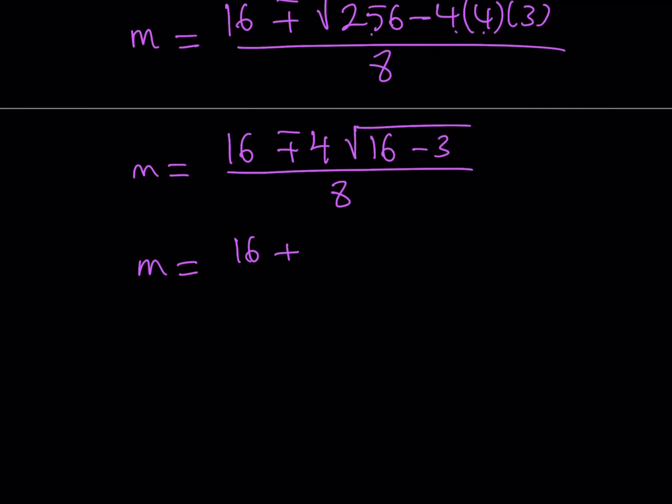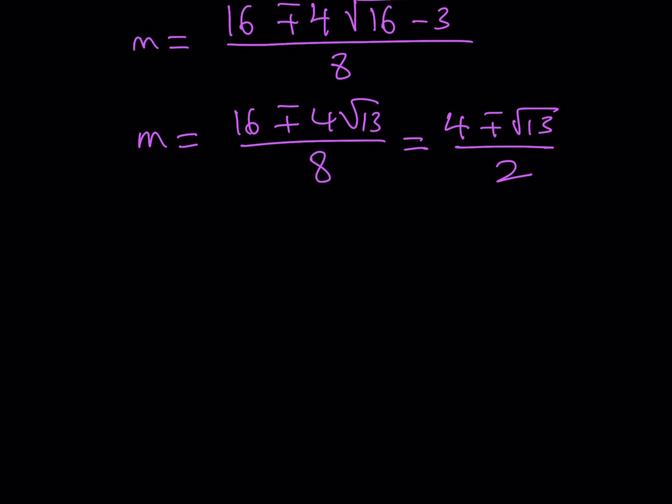That means that my m values are going to look like this. 16 plus minus 4 times the square root of 13 all over 8. Obviously, this can be simplified because there's a common factor. Everything can be divided by 4. If you do that, you get 4 plus minus root 13 divided by 2. So these are the m values.